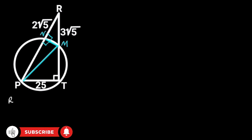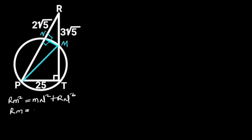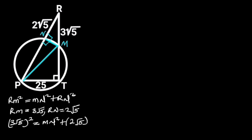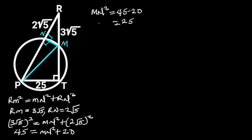From Pythagoras' theorem, RM is equal to 3√5 and RN is equal to 2√5. Substituting these values in the formula: (3√5)² = MN² + (2√5)². Since (3√5)² = 45 and (2√5)² = 20, making MN² the subject gives MN² = 45 − 20 = 25. Taking the square root of both sides gives MN = 5.